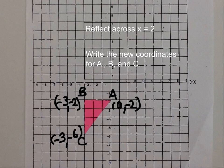So my line of reflection is x equals 2. x equals 2 is a vertical line. It's right here where x is equal to 2.